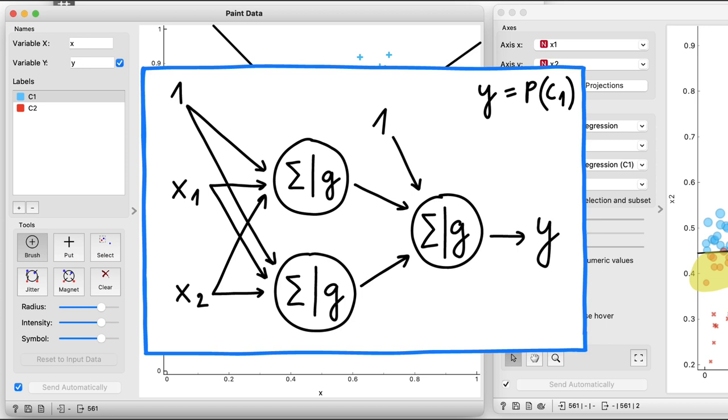Three logistic regressions together, or a network of logistic regressions. Now for historical reasons such a network of logistic regressions is called a neural network. Neural because some researchers in the past were inspired by the way neurons process information.